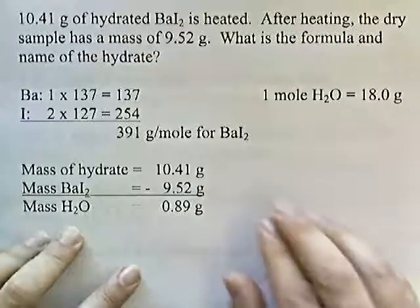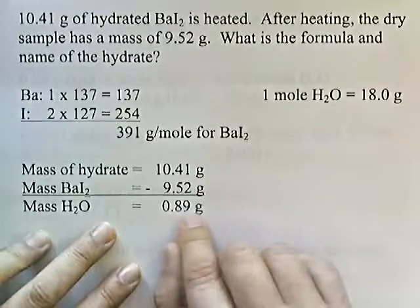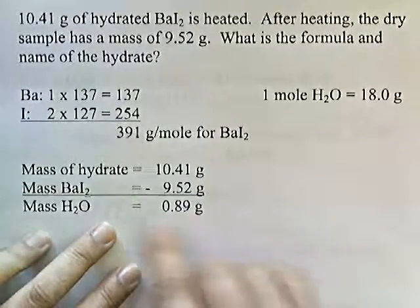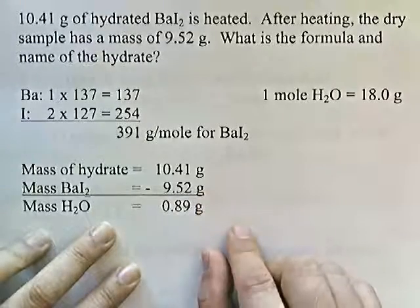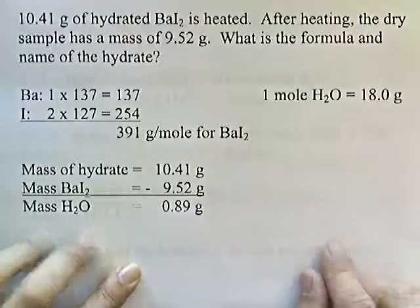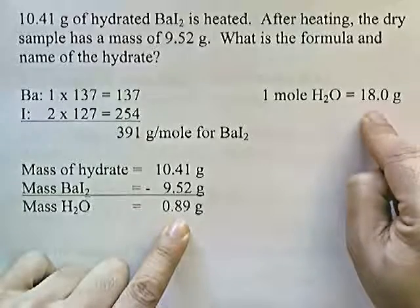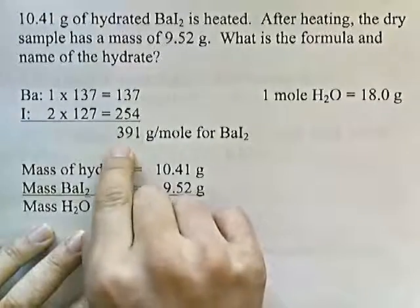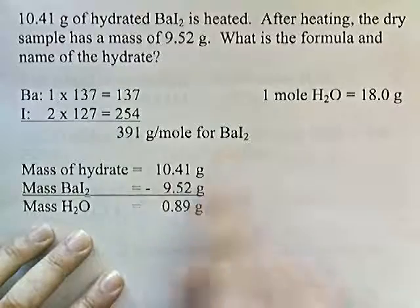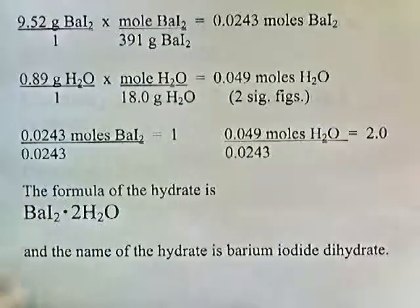So we now know that the mass of water is 0.89 and the mass of barium iodide is 9.52. We'll take 0.89 divided by 18 to get the moles of water, and we'll take 9.52 and divide it by 391 to get the moles of barium iodide. So that's what we do in the next step.